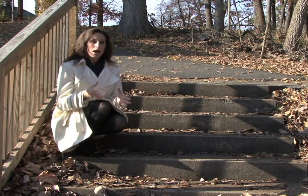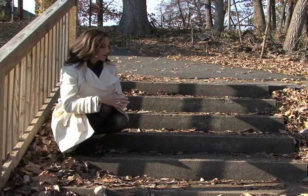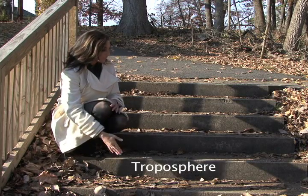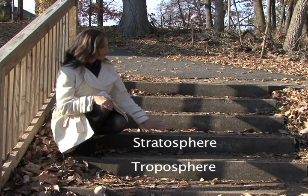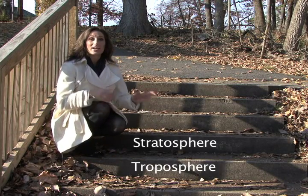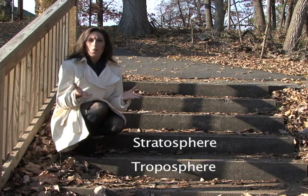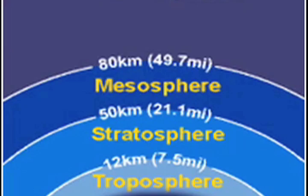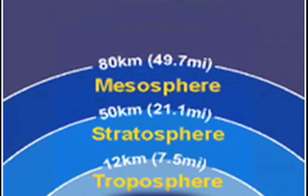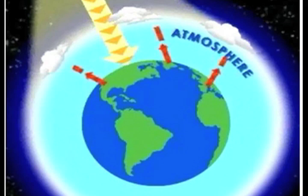The tropopause is the boundary that separates the troposphere from the stratosphere, and this layer has a temperature inversion. The stratosphere is typically located at 25 kilometers above Earth's surface, and this inversion inhibits vertical currents of the troposphere from spreading into the stratosphere.